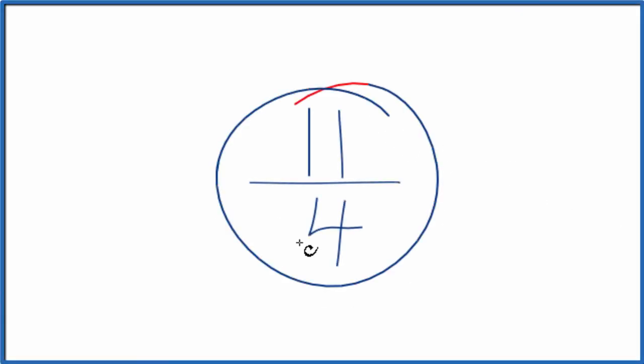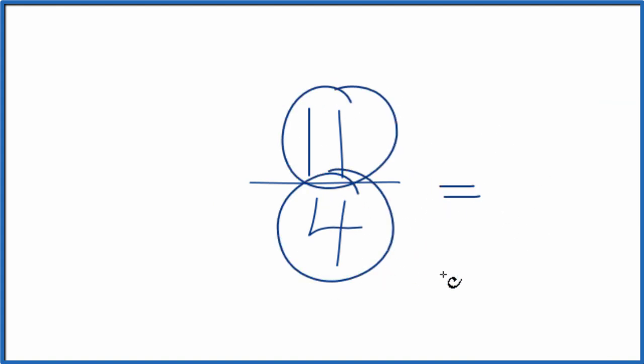Let's simplify the fraction 11 fourths. So to do that, what we want to do is find another fraction that's equal to 11 divided by 4. It's just that we've simplified or reduced it down to lowest terms.